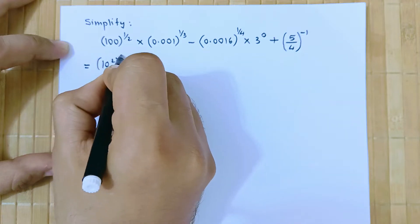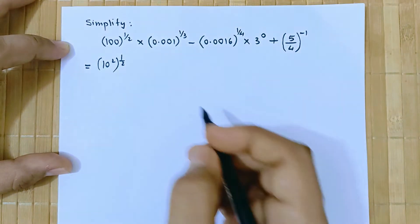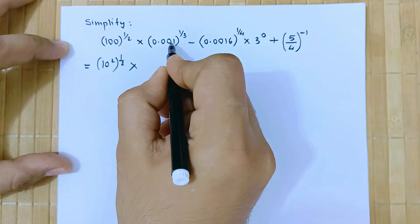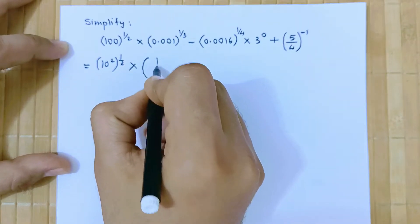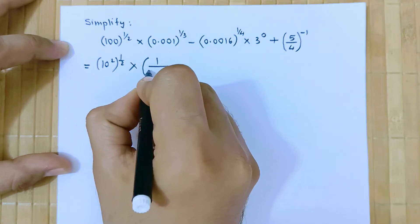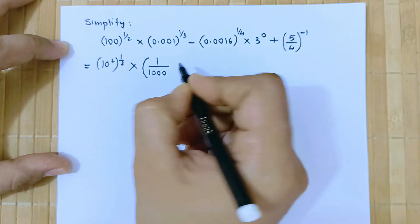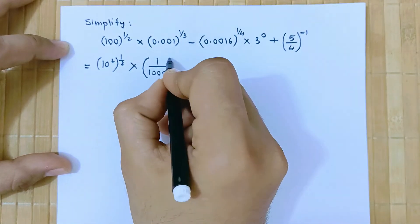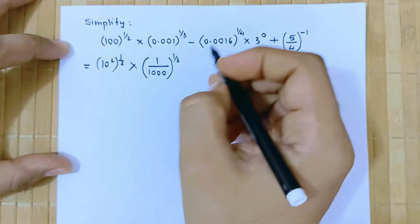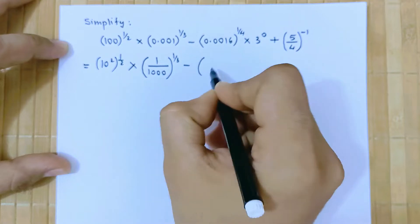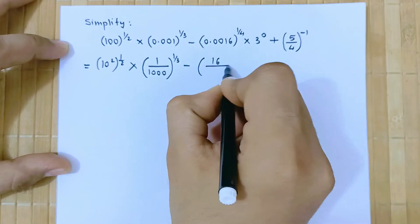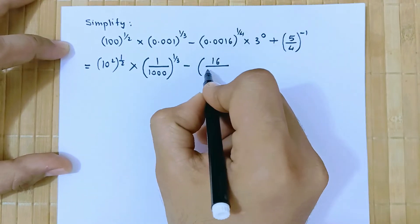We can write this as 1 upon 1000. It has 3 decimal places raised to 1 by 3 minus this term could be written as 16 upon 1, 2, 3, 4 decimal places.